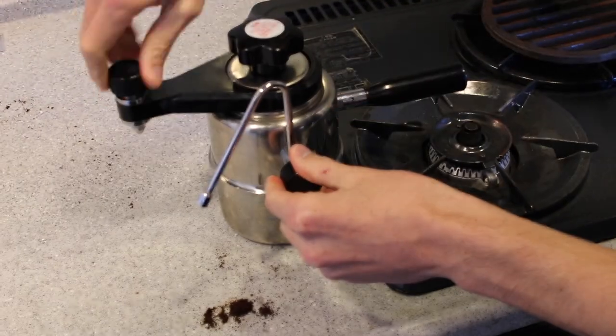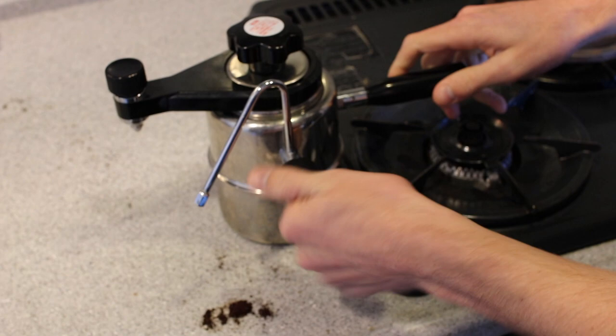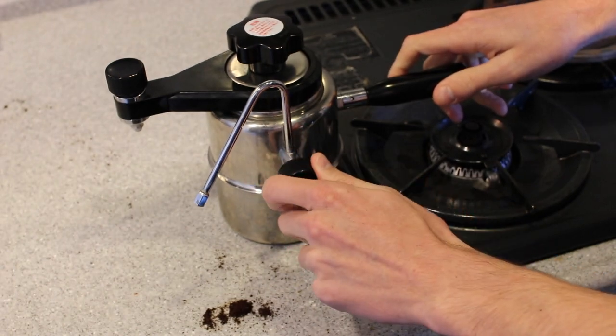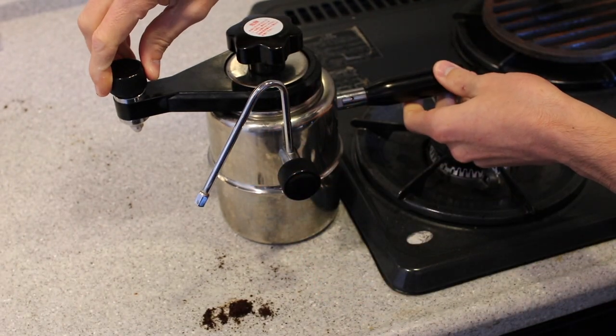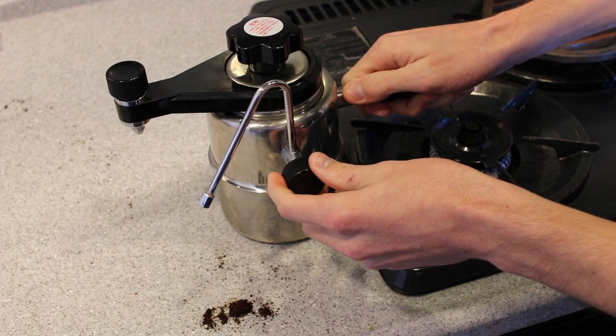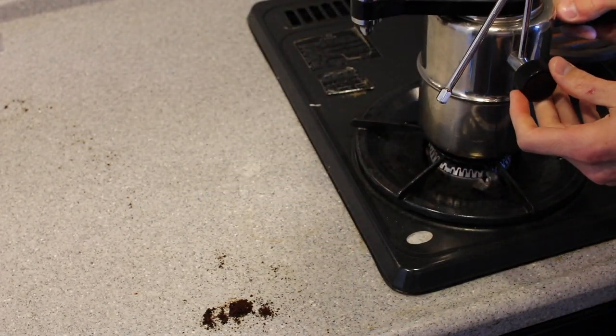For the top nut, the tighter the better. Just make sure that you're able to get it off again. On the head of the machine, ensure the top coffee valve is fully closed and the steam valve is fully open. For both valves, closed is clockwise.